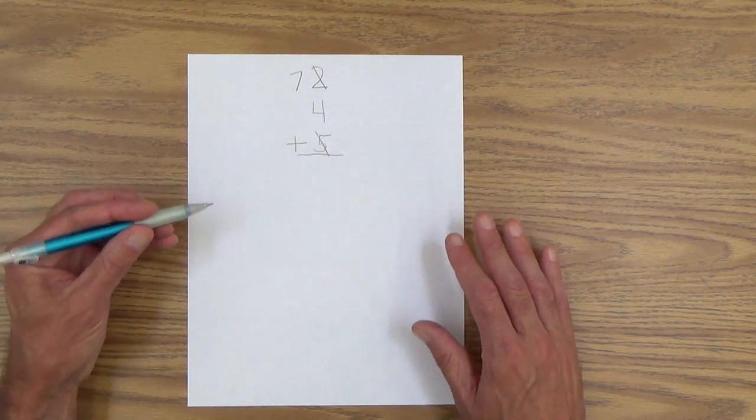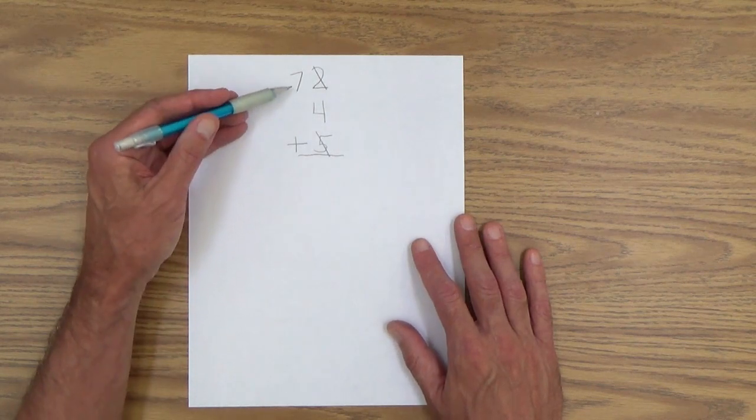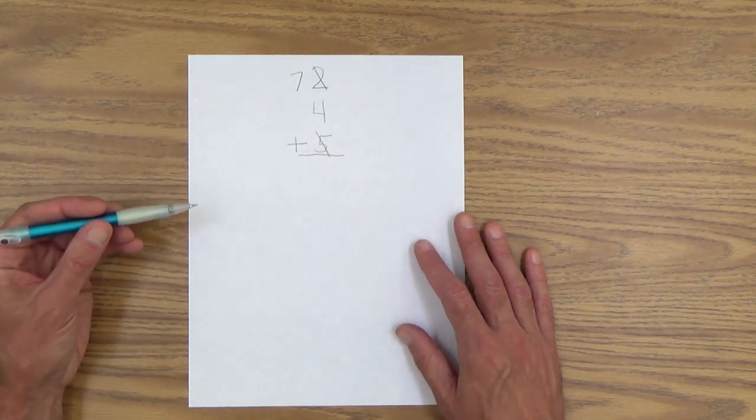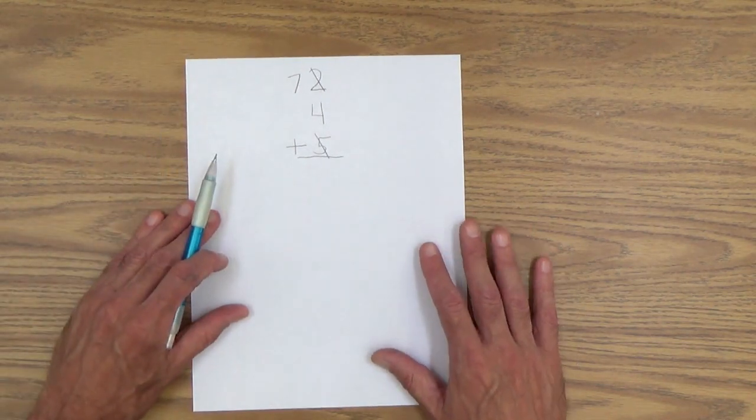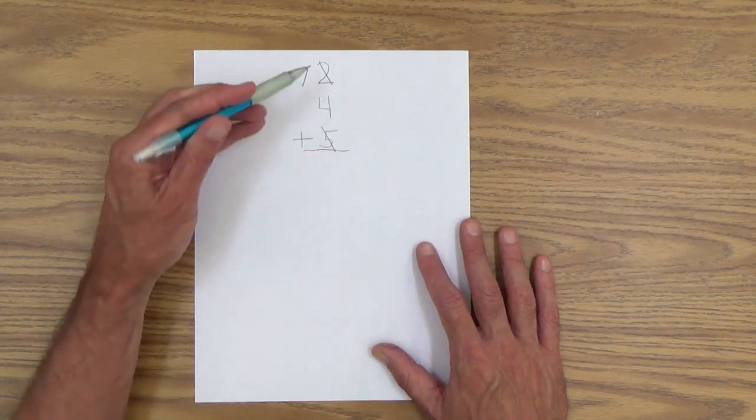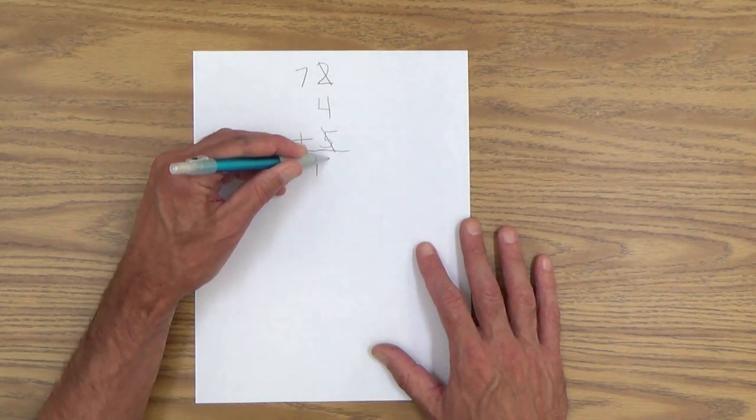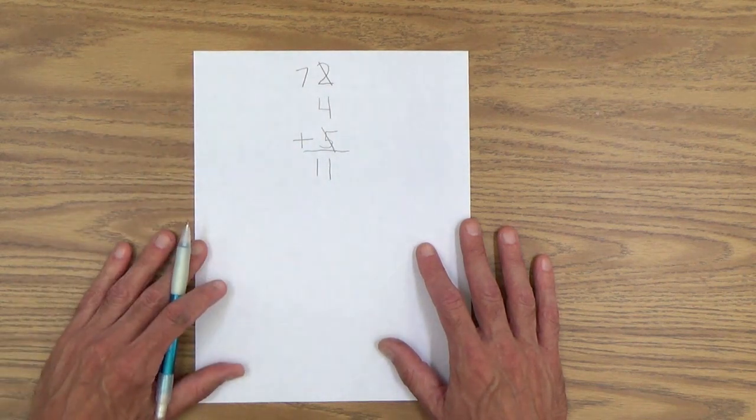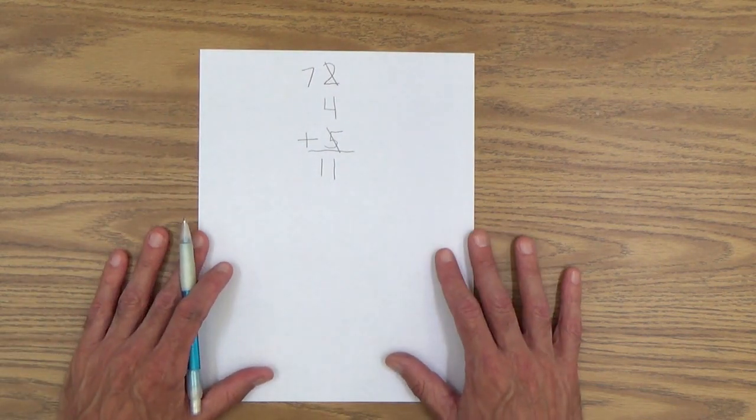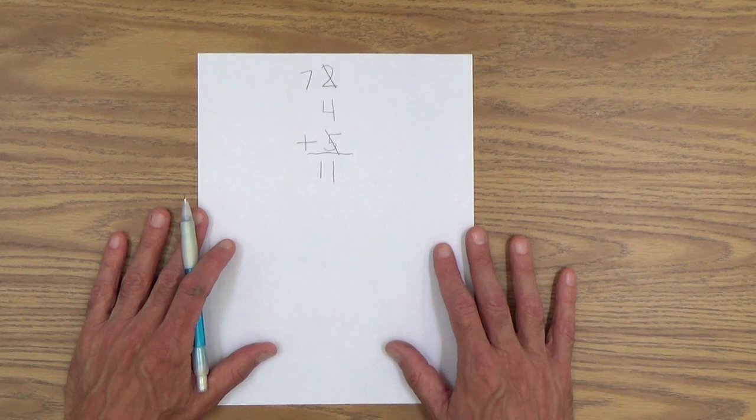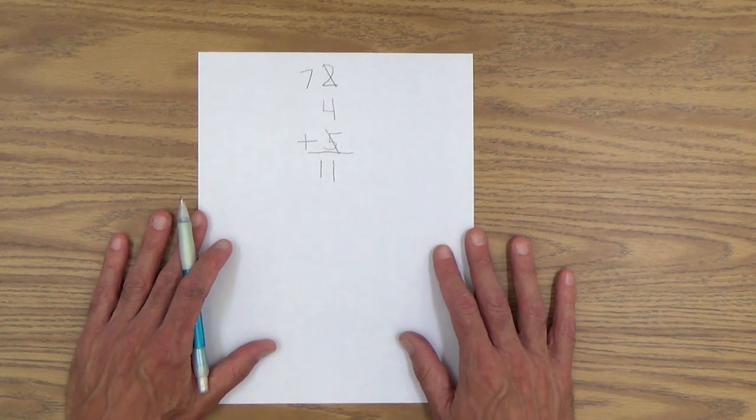And, of course, hopefully, he knows the sum of these two numbers. If not, have him use the addition table. And seven plus four is eleven.